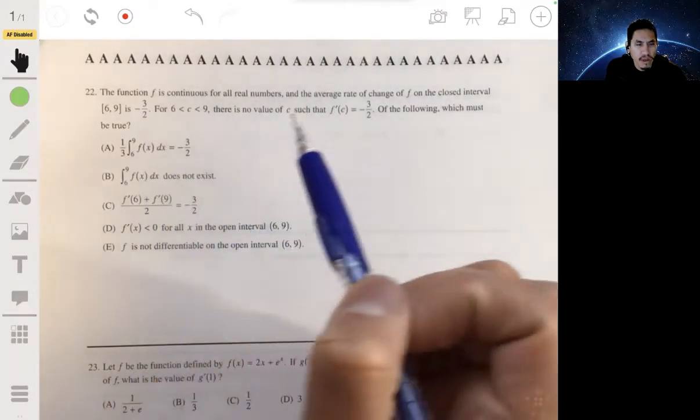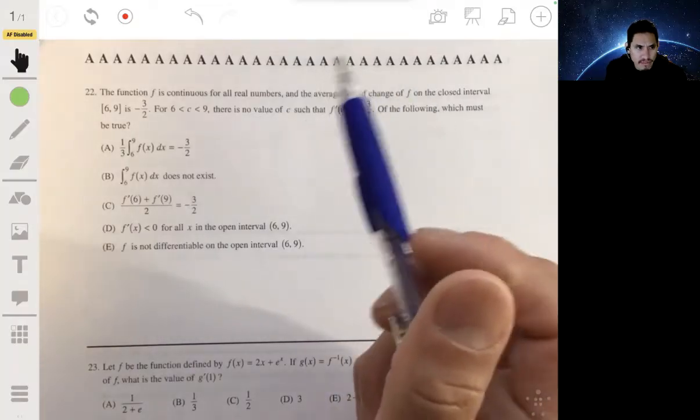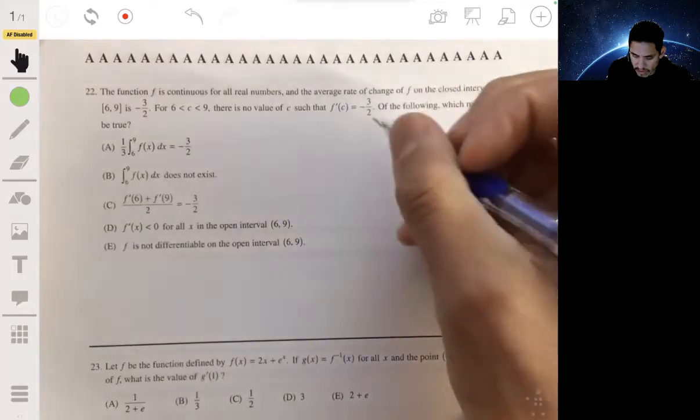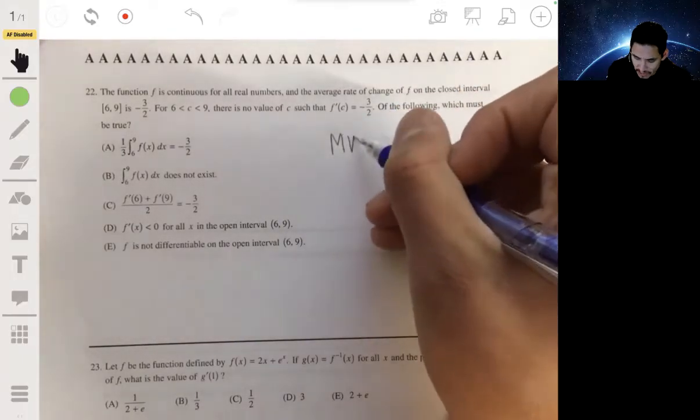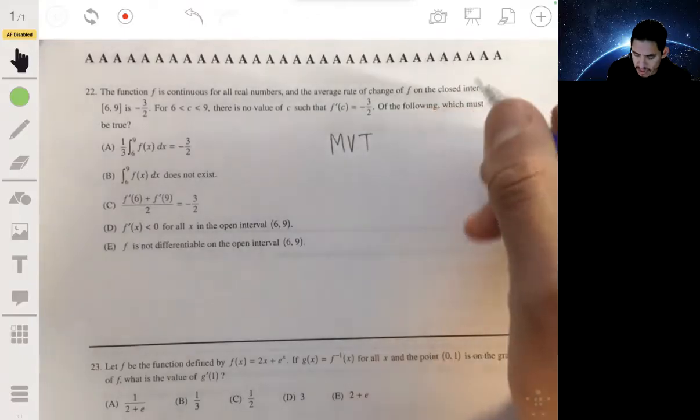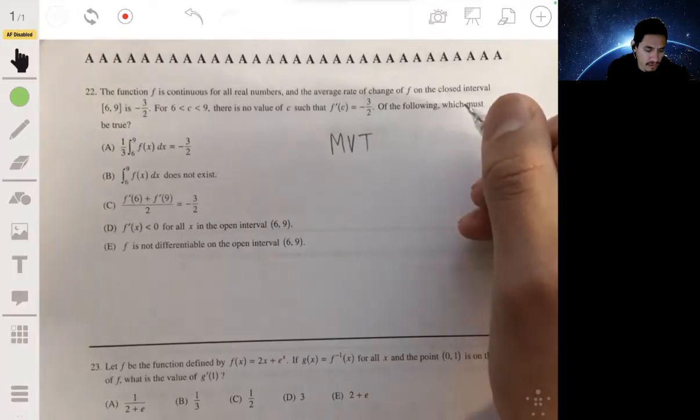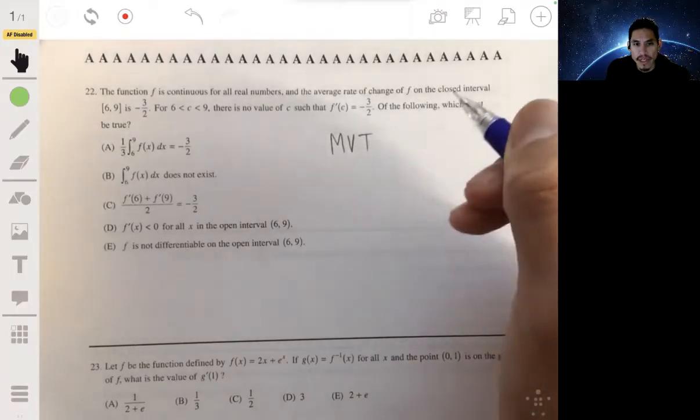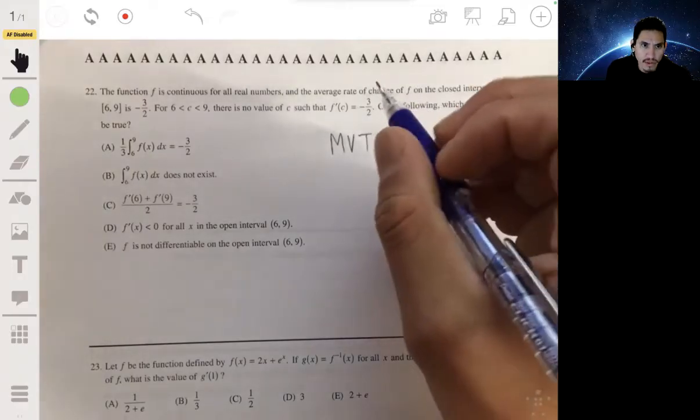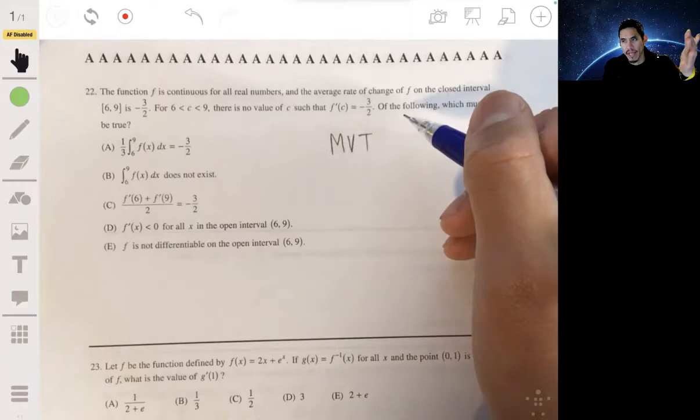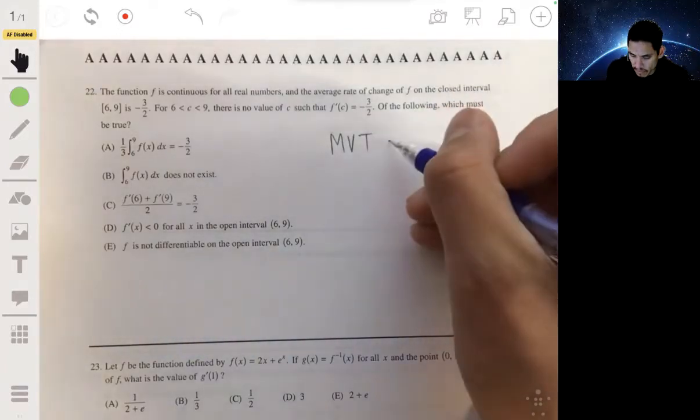Of the following which must be true? Right off the bat I can recognize this is basically going to deal with the Mean Value Theorem, which essentially says that the function is continuous and differentiable on an interval and you're going to have a value in that interval so that the slope will be the same within an interval as connecting the endpoints.